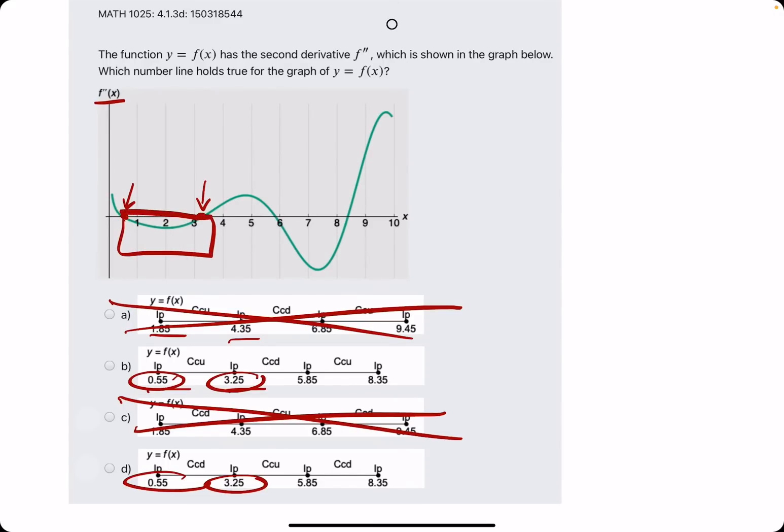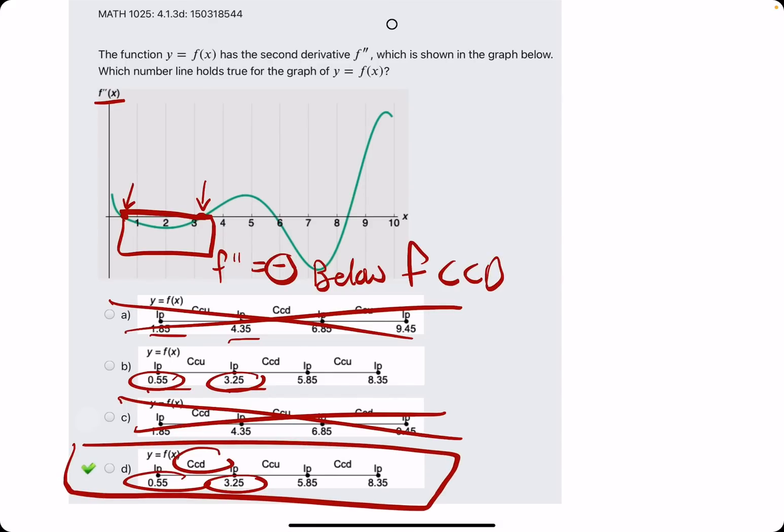f'' is below the x-axis between these two inflection points, these two x-intercepts. And when f'' is negative or below the x-axis, that means f is concave down. So concave down between those two values leads us to option D.